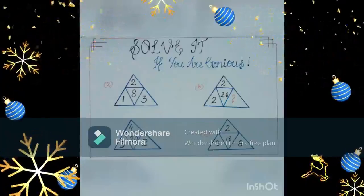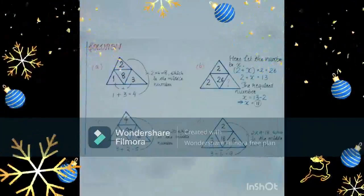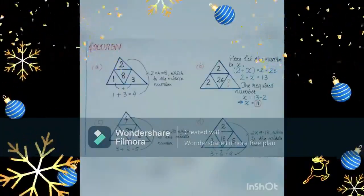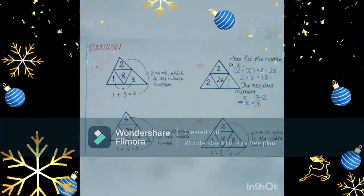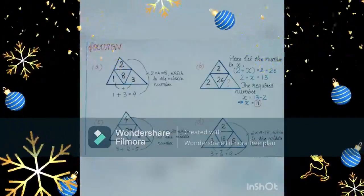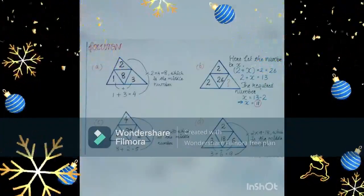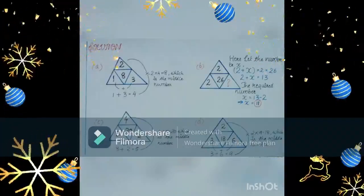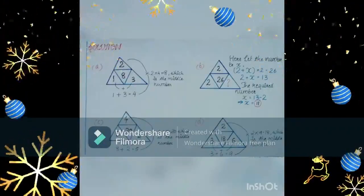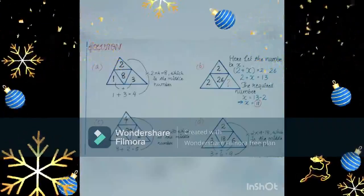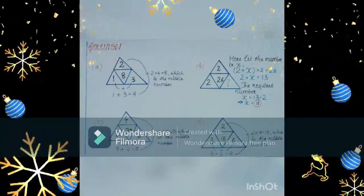Solve the puzzle if you are a genius. Solution: in A, we have 1 plus 3 is equal to 4 and 2 into 4 is equal to 8 which we have as the middle number. Coming to C, 3 plus 2 is equal to 5 and 4 into 5 is equal to 20 which is the middle number. And in D, 3 plus 6 is equal to 9 and 9 multiplied with 2 gives 18 which is the middle number. And coming to B, we can assume the number to be x and by solving the required equation, we get the number as 11. Therefore, we get x is equal to 11.